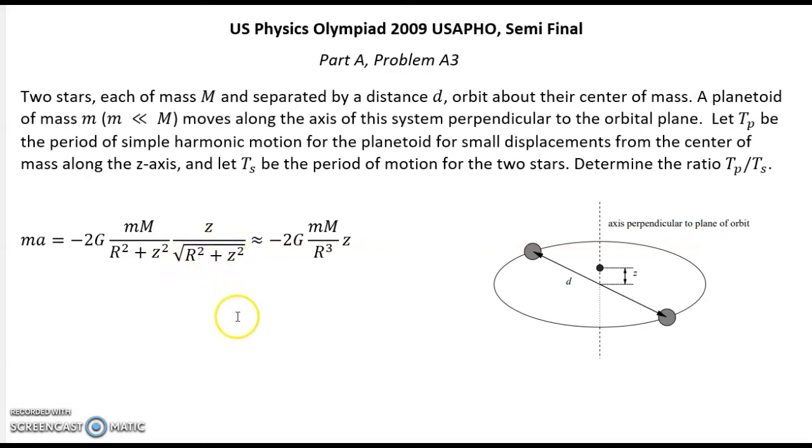But for our conditions this oscillation is small. It means that z much less than r. r is radius for these two stars.